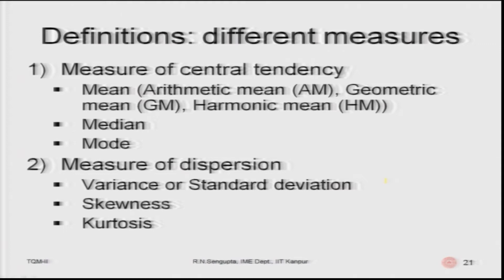Now we consider definitions of different measures: measures of central tendency — arithmetic mean, geometric mean, harmonic mean, and median — and measures of dispersion, which include variance, standard deviation, skewness, and kurtosis.